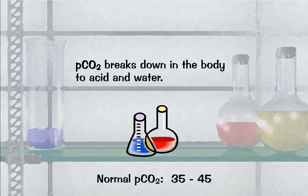The partial concentration of carbon dioxide in the blood breaks down in the body to acid and water. The normal partial concentration of carbon dioxide in the blood is 35 to 45.